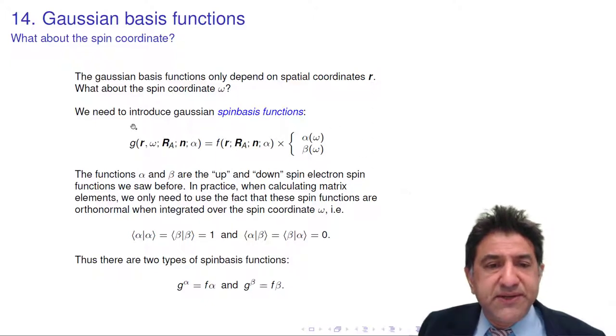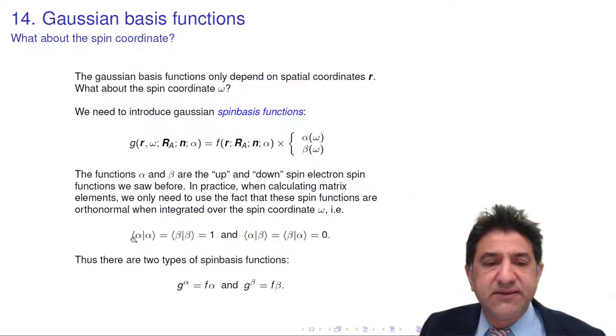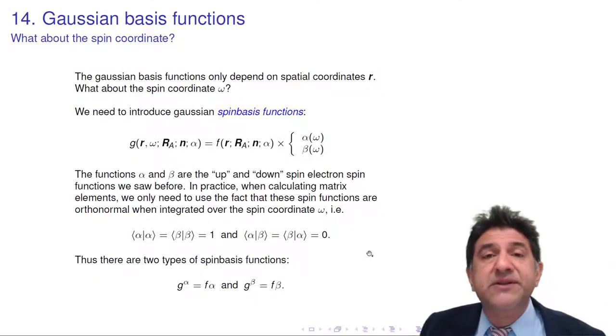All right. Now, when we come to making matrix elements of this, we need to do integrals, 3D integrals, of course, but also integrals over the spin. Now, it doesn't really matter what these spin functions look like, because when we come to do integrals, we just need to be able to integrate them with each other. And so all we need to know is the fact that an alpha integrated with itself is 1, and that beta integrated with itself is 1, and that the alpha and beta functions are orthogonal. Alpha integrated with beta, and beta integrated with alpha, integrated over the spin coordinate is 0. With these facts, we can get all the integrals we need.